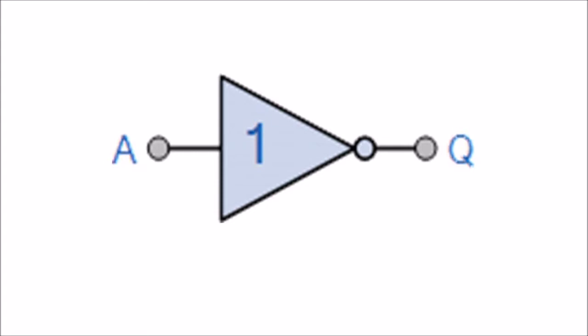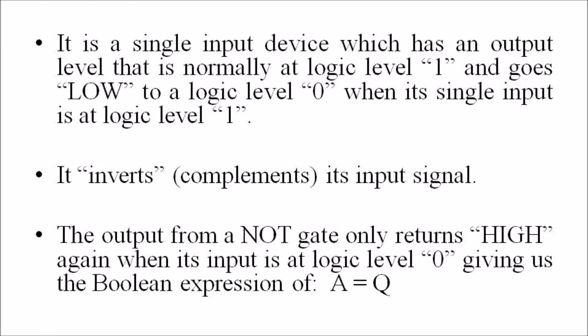The symbol is as follows where we can see one and only one input and there is an output. It is a single input device which has an output level that is normally at logic level 1 and goes low to logic level 0 when its single input is at logic level 1.